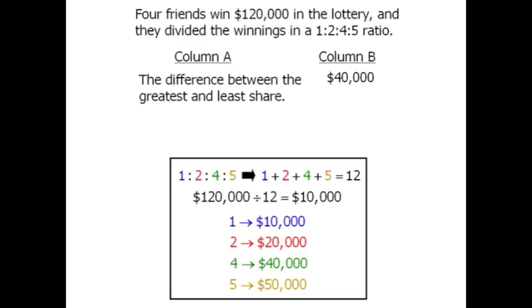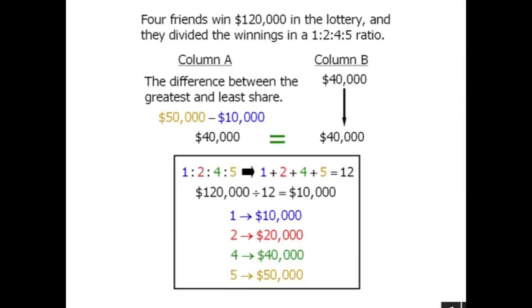Now column A asks us to find the difference between the greatest and least share. This will be equal to $50,000 minus $10,000 which equals $40,000. When we compare this to column B, we see that they are equal, so the answer must be C.